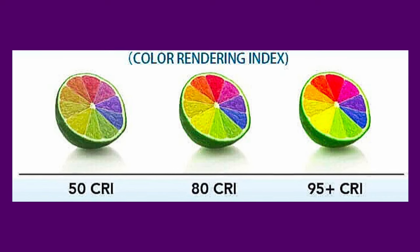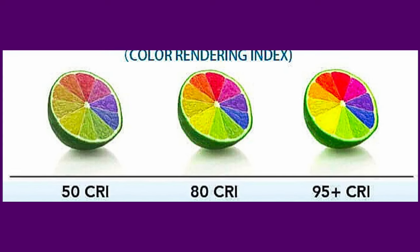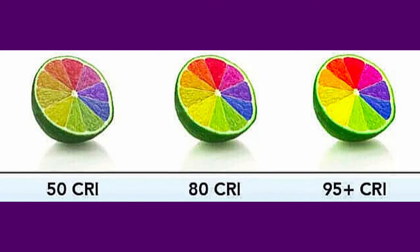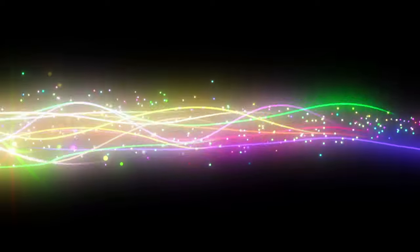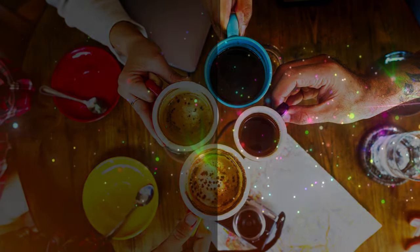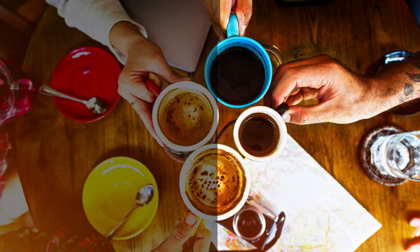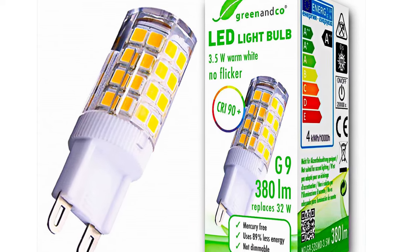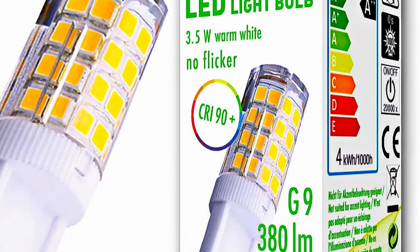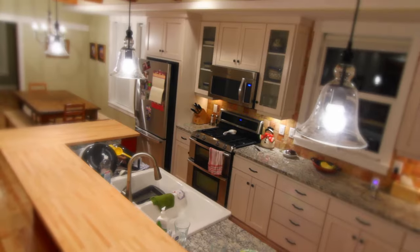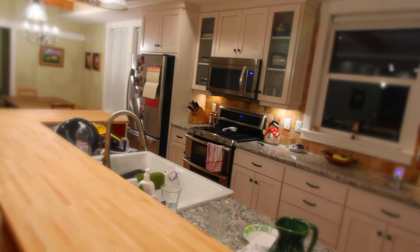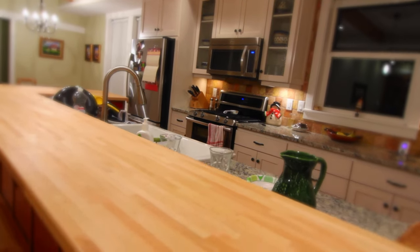In summary, the Color Rendering Index, or CRI, determines how accurately a light source reveals the true colors compared to natural sunlight. A higher CRI rating ensures better color accuracy, while a lower rating may lead to distorted or washed-out colors. For best results, pay attention to the light bulb's CRI rating when considering the room's function and desired atmosphere. The next time you're choosing light bulbs, remember the power of CRI and how it can transform your space.